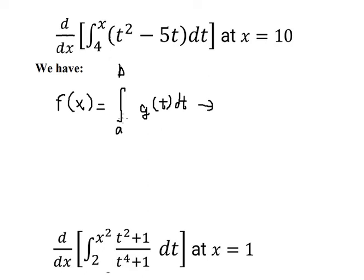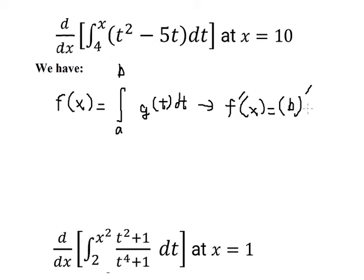So if we do the first derivative of this one, we need to do the first derivative of B on the bound here, and the value of the bound will change for T. Minus, we do the first derivative of A, and the value of A will change for T.